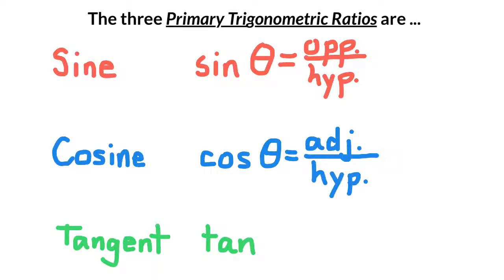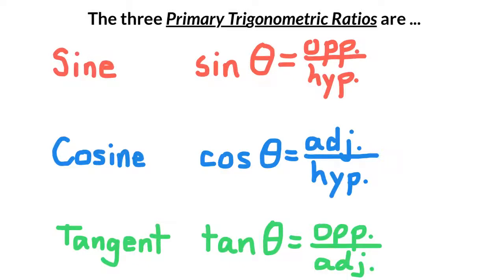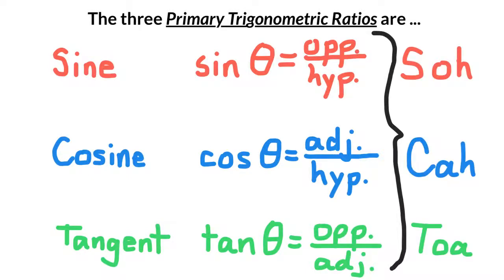And the tangent of your reference angle is equal to the opposite side divided by the adjacent side. There's a shorthand way of remembering these — it's called SOH CAH TOA. Sine is equal to opposite over hypotenuse. Cosine is equal to adjacent over hypotenuse. Tangent is equal to opposite over adjacent.